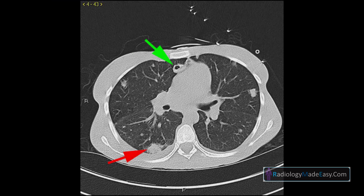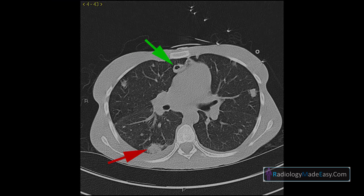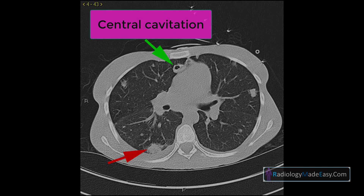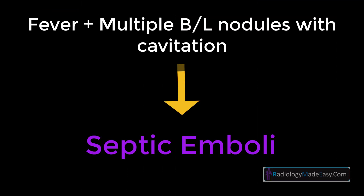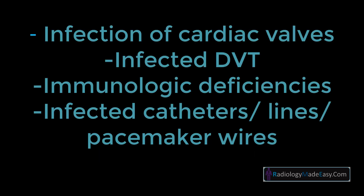The CT of the chest confirms multiple bilateral pulmonary nodular consolidations. The lesion indicated by the green arrow demonstrates central cavitation. In this patient with fever, multiple bilateral nodules with cavitation, the findings are most consistent with septic emboli.